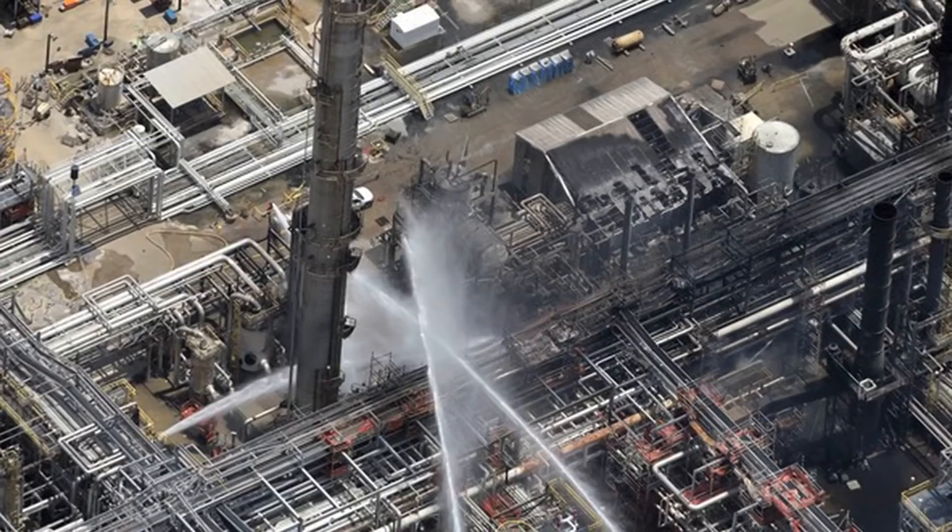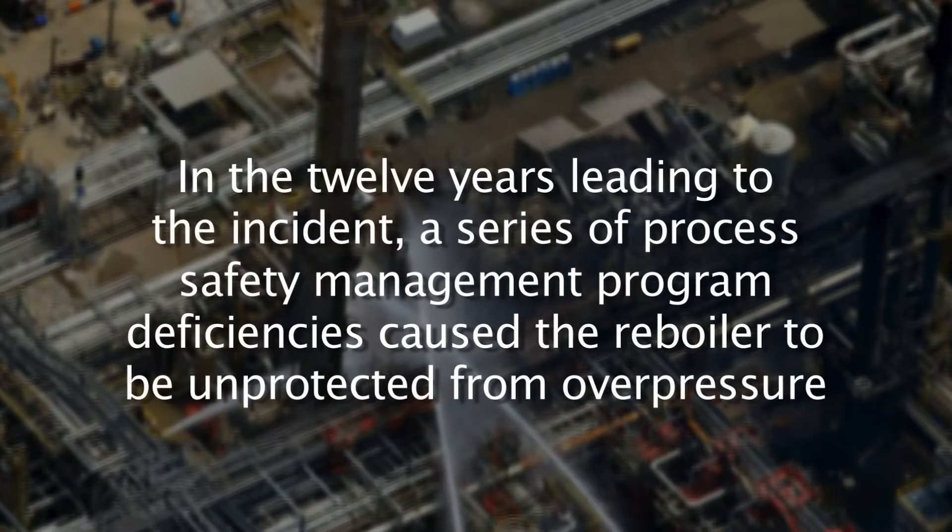In this scenario, just having a pressure relief valve available could have prevented the explosion. The CSB discovered that in the 12 years leading to the incident, a series of process safety management program deficiencies caused the reboiler to be unprotected from overpressure.